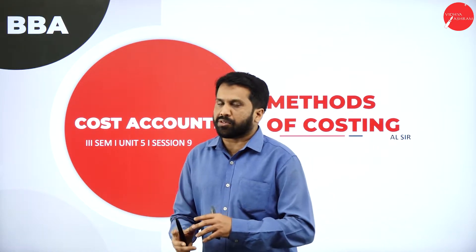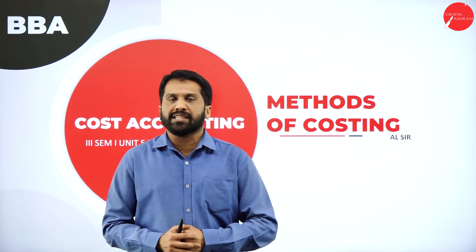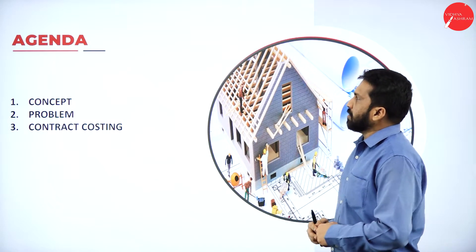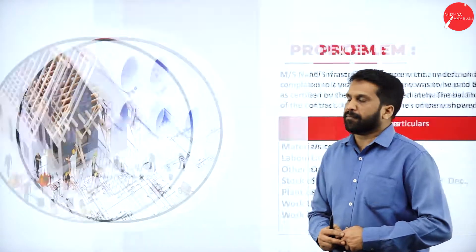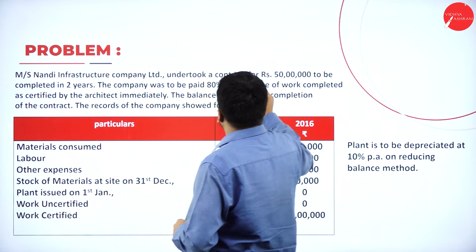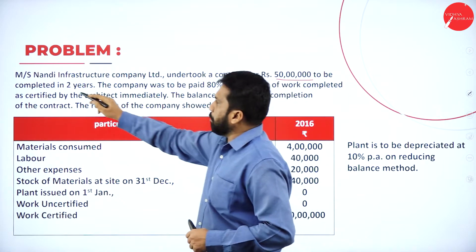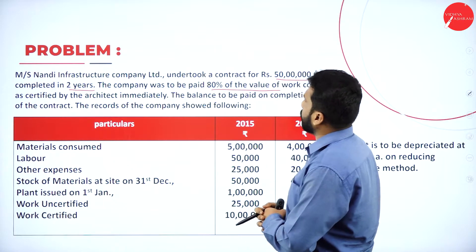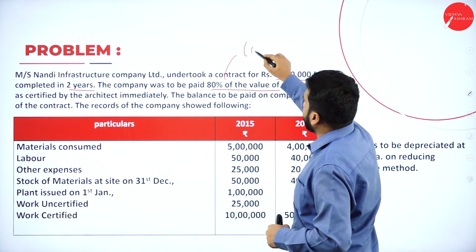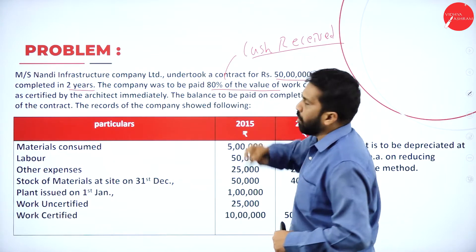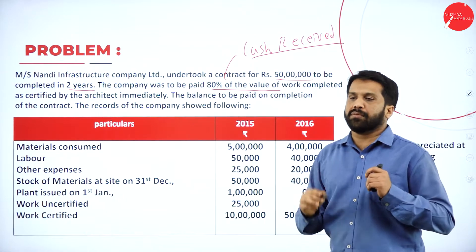Every session I wanted to discuss about contract fee account, and in today's session we'll go with contract fee account — concept, problem, as well as contract costing. These are the information we have: Nandi Infrastructure Company Limited, contract of 50 lakh to be completed in 2 years. The company was paid 80% of the value of work completed — this is nothing but cash received.